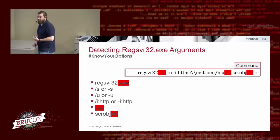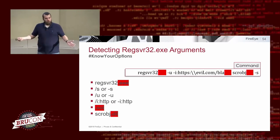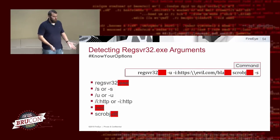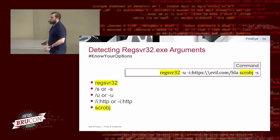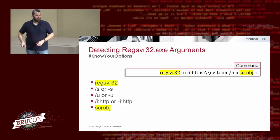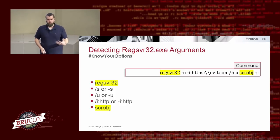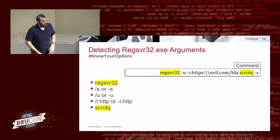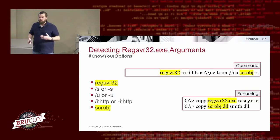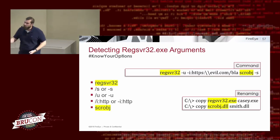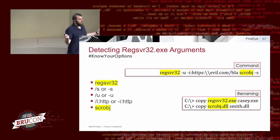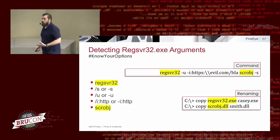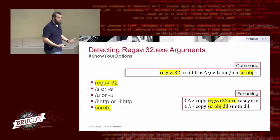If you're looking only for network connections to a .sct file or .sct in arguments, that can be completely evaded — attackers do this all the time. Another thing: defenders often write detections based on process name being regsvr32 with certain arguments. But attackers can rename regsvr32 to something else and rename the DLL itself, since regsvr32 simply looks on disk for whatever DLL name you give it. You can rename scrobj.dll to smith.dll and now scrobj doesn't appear on the command line or even in image load events. So for each piece ask: can we change this? How does that affect our detection?